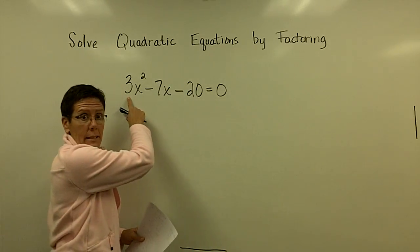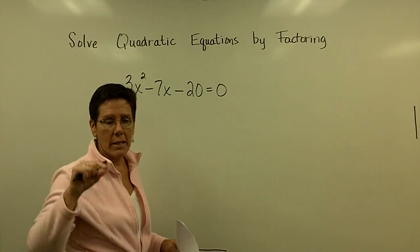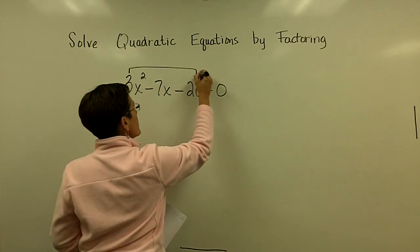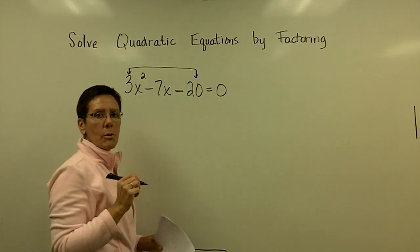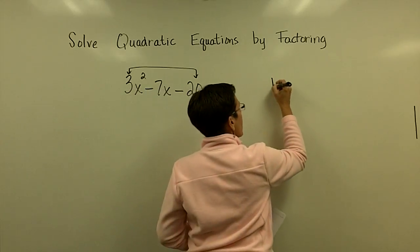So I've got a three in front of the x squared term. If I want to get this factored correctly the first time right away with no questions asked, then I use what's called the AC method.